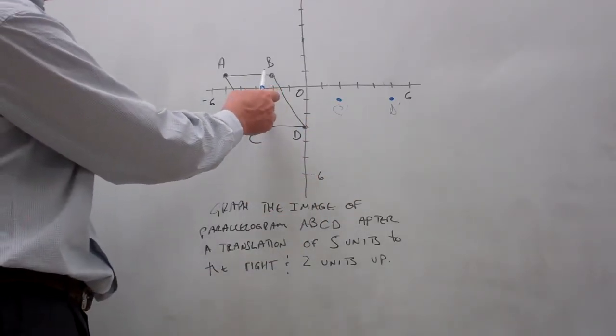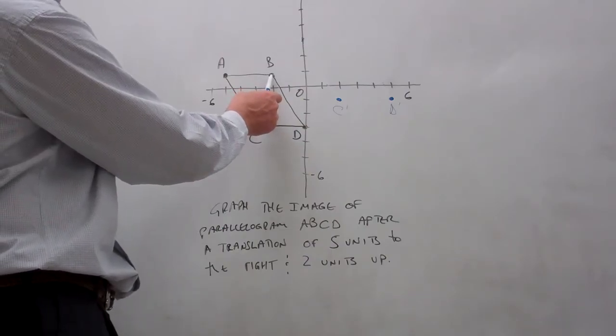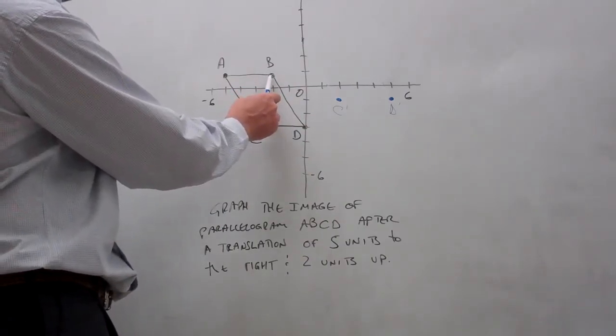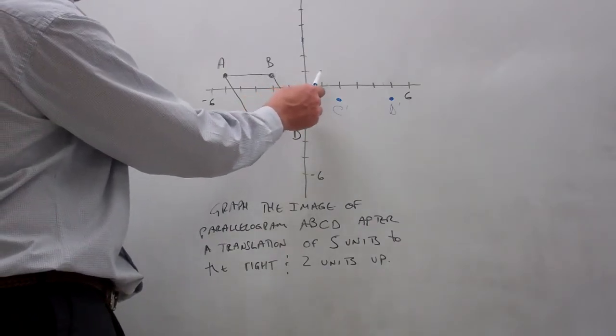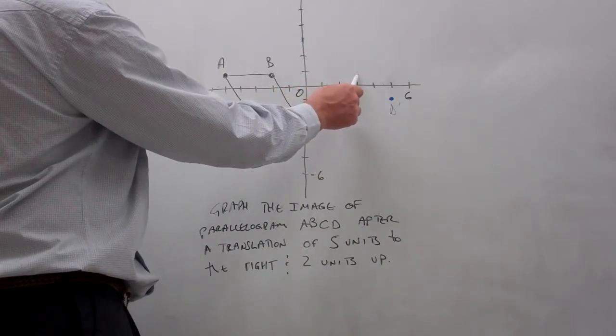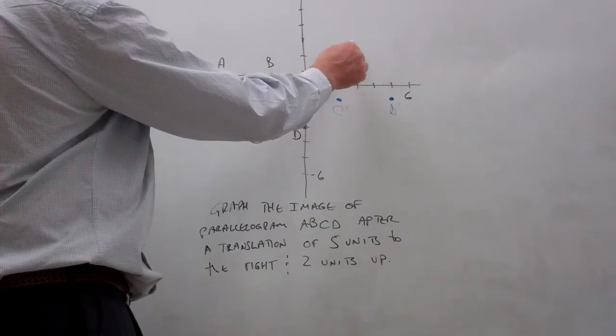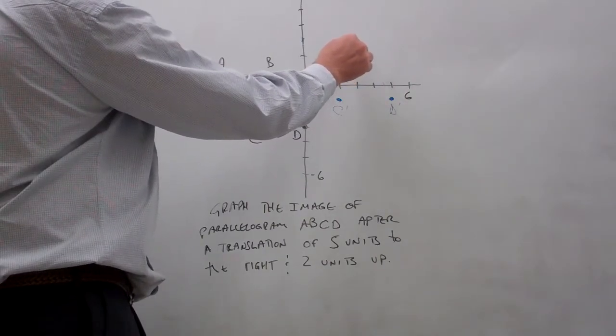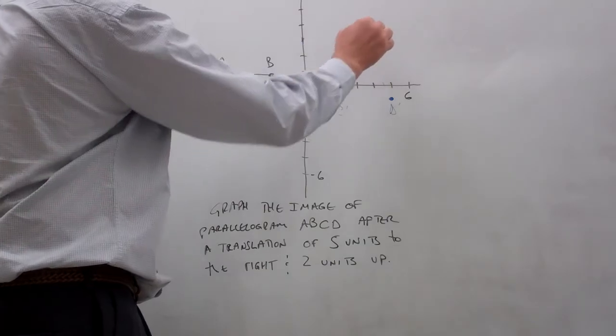Same thing with B. Right now we have coordinates of negative 2, 1. When we go five units to the right and two units up, that puts us right here. And we'll call that point B prime.